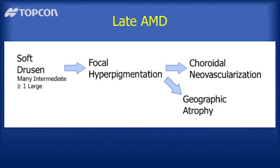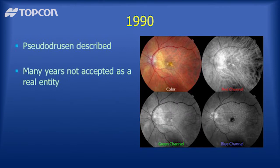Later studies found that focal hyperpigmentation was a risk factor for AMD. In 2008, the AREDS group published a paper laying out a roadmap for AMD that started with many intermediate or one large druse, then these patients went to focal hyperpigmentation, and then could go to choroidal neovascularization or geographic atrophy. That was pretty much the prevailing idea behind AMD at that time — less than 10 years ago. But they ignored a number of different things.